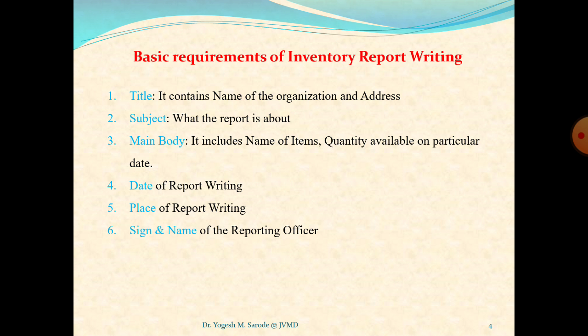The second point is subject. Subject is self-explanatory — because we are writing an inventory report, the subject will be what the report is about. It is an inventory report of a particular company on a particular date. The third point is the main body of the inventory report. It should include the name of items and quantity of particular items available on a particular date. Many times it is also displayed in the report about the stock — whether the stock is in good position or in need of repair. But in the simplest way, a company wants the exact position of good quality items, so we show the number of items available on a particular date that are of good quality.